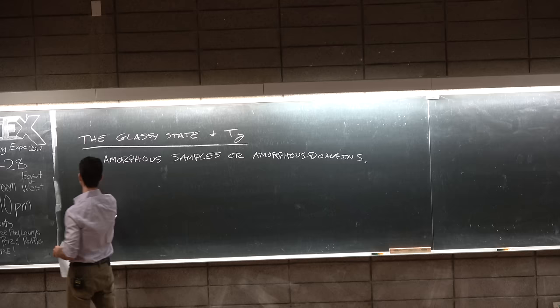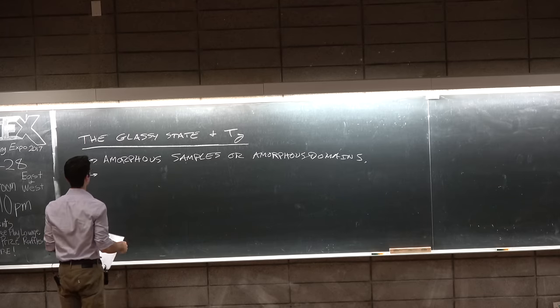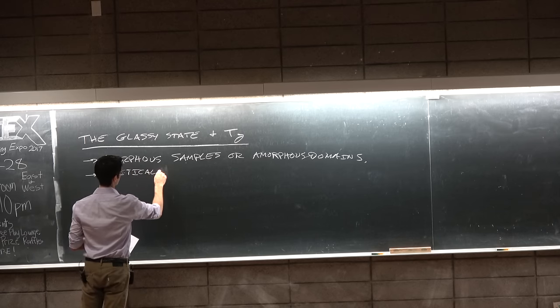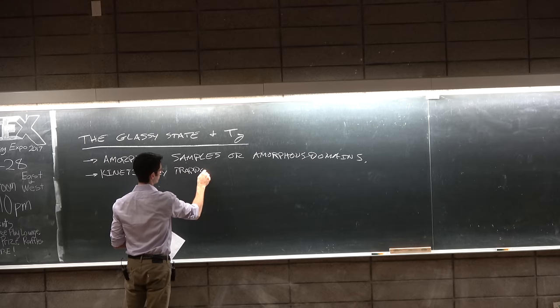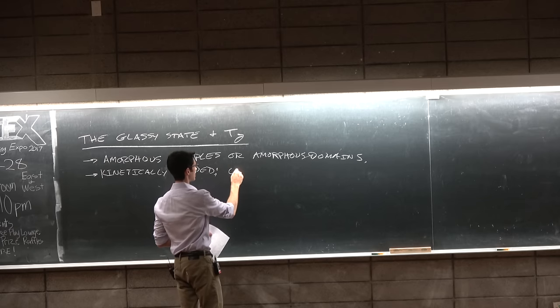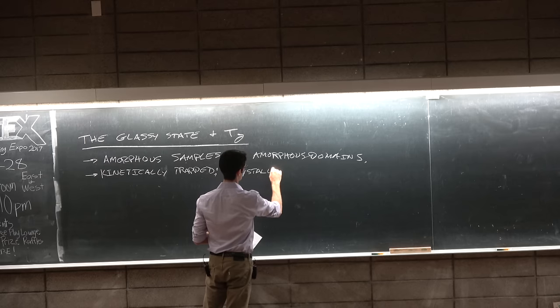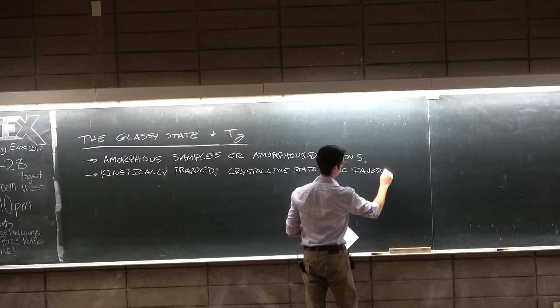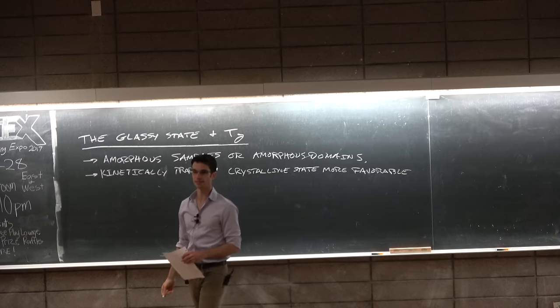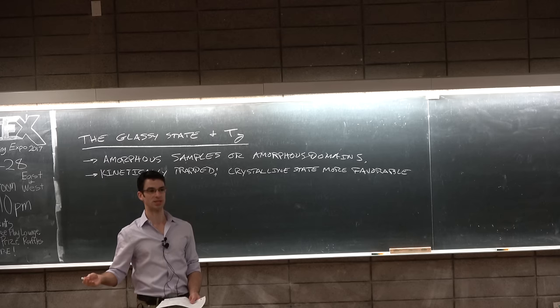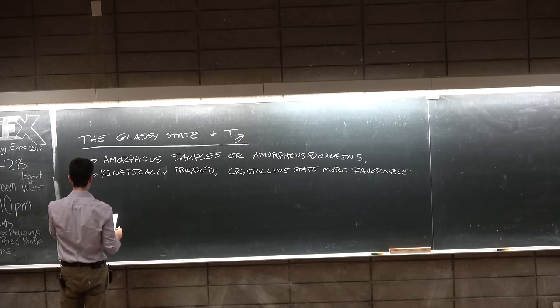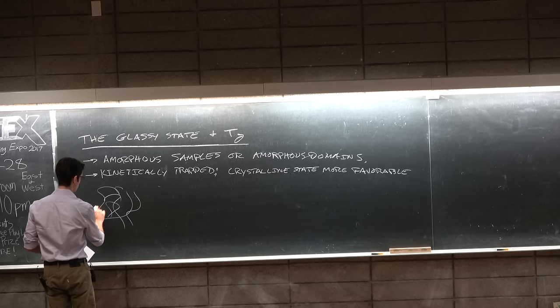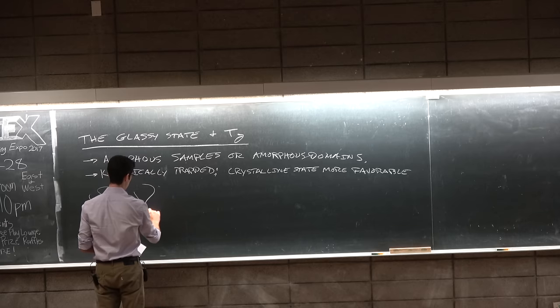Remember, it doesn't make sense for a crystalline region to have a TG. Now, the glassy state is kinetically trapped. That is to say that the crystalline state is actually more favorable because the crystalline state takes better advantage of the van der Waals interactions between chains. So at temperatures below the TG, we're said to be in a glassy state.